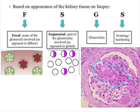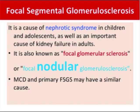Segmental means only part of the glomerulus is involved, and there is scarring and hardening in the involved glomerulus. It is a cause of nephrotic syndrome in children and adolescents, as well as an important cause of kidney failure in adults.